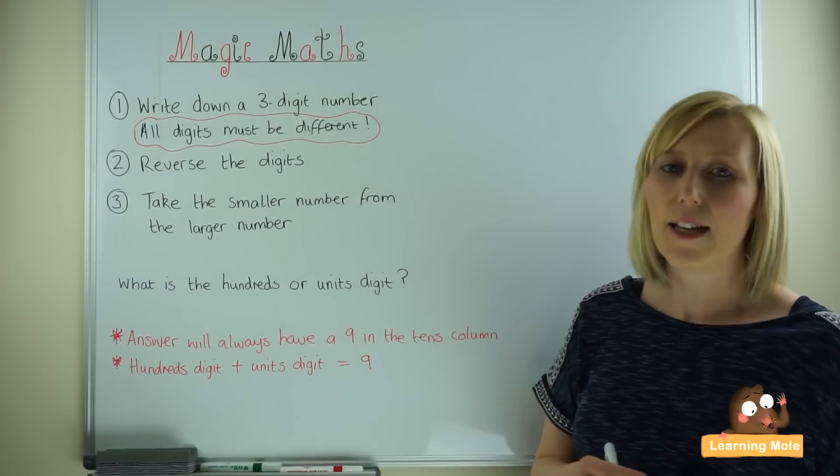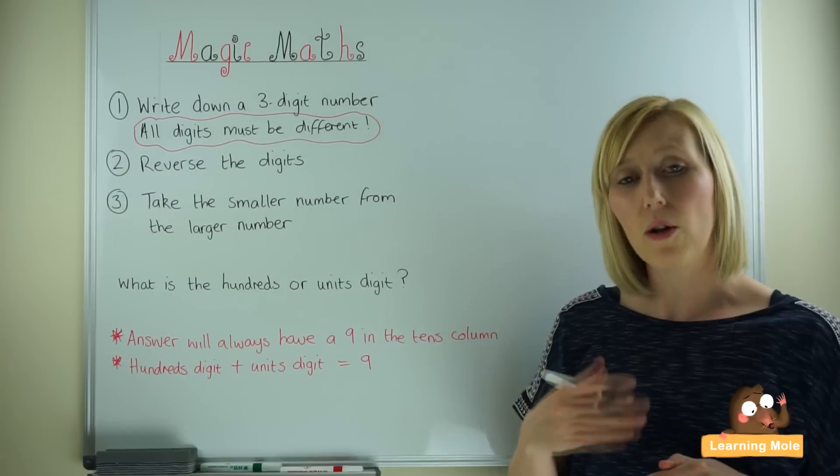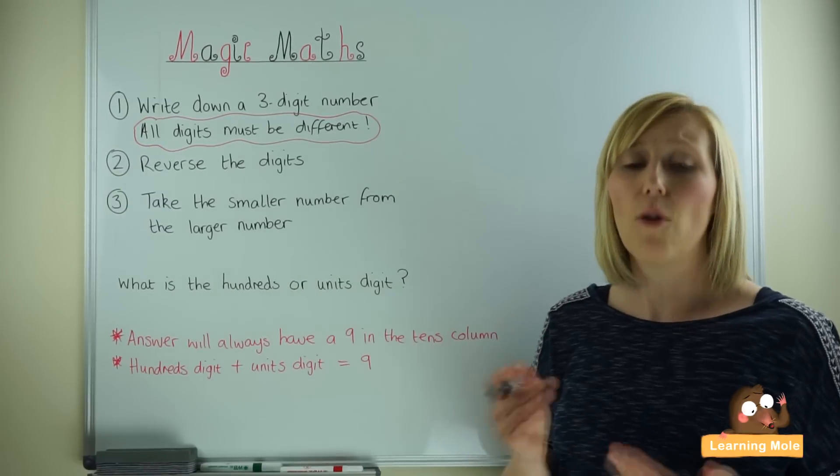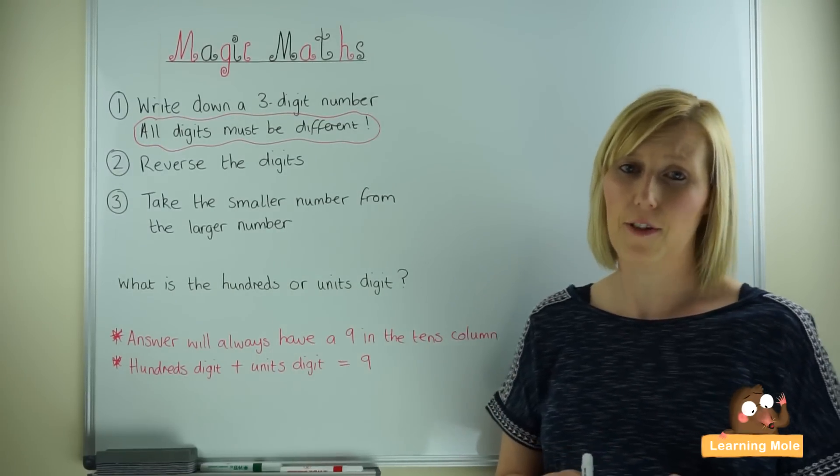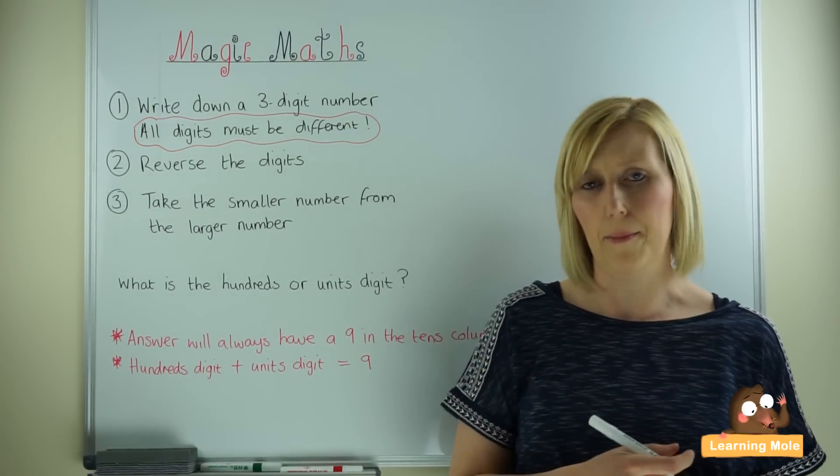You're asking the adult or your child to write down a three digit number where all the digits are different. So it has to be a number with hundreds, tens and units in it and all the numbers have to be different. I wouldn't use decimals, just literally a whole number.